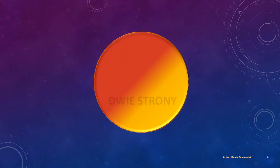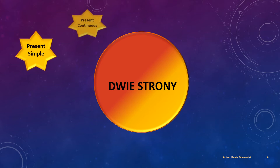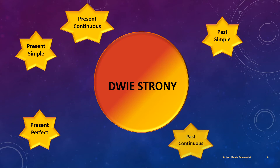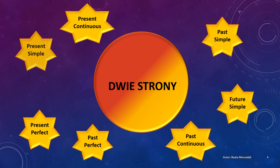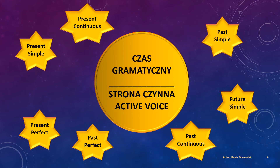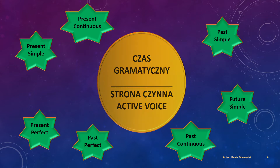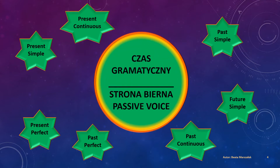Czekają na nas dwie strony i krótka podróż w czasie, ponieważ zanim rozpoczniemy przygodę ze stroną bierną, musimy najpierw spojrzeć wstecz na poznane dotąd czasy gramatyczne i zrewidować naszą dotychczasową wiedzę na ich temat. Gdy to zrobimy, okaże się, że poznaliśmy je do tej pory połowicznie — poznaliśmy zaledwie jedną stronę tego medalu, stronę czynną. Każdy z tych czasów domyślnie był przedstawiany w stronie czynnej, gdy tymczasem w ukryciu czekała ta druga, tajemnicza, niewspominana dotąd strona bierna. I to jest właśnie ten moment, kiedy ma ona swoje wielkie wejście.